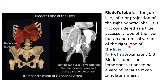Riedel's lobe is a tongue-like inferior projection of the right hepatic lobe. It is not considered a true accessory lobe of the liver, but an anatomical variant of the right lobe. The male-to-female ratio is approximately 1 to 3, so it is more common in females. Riedel's lobe is an important variant to be aware of because it can be mistaken as a mass. It is considered part of segment six.